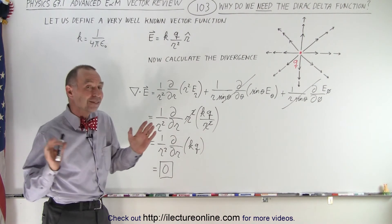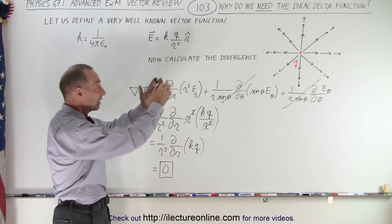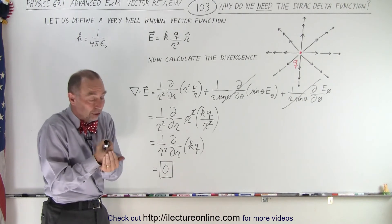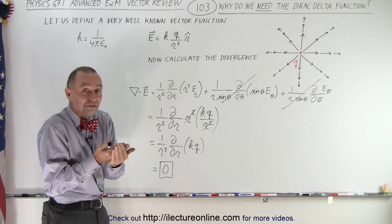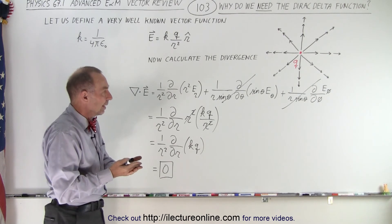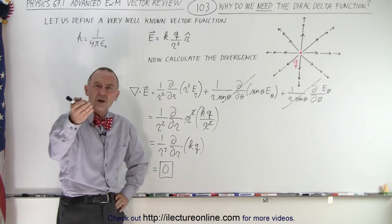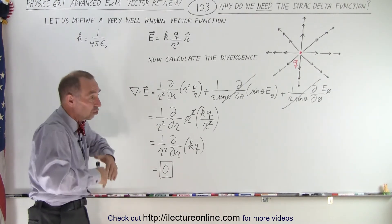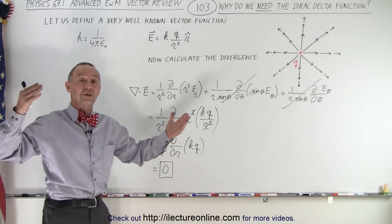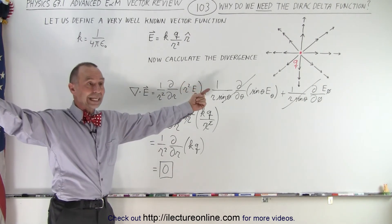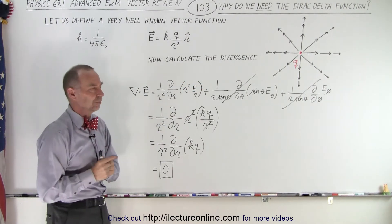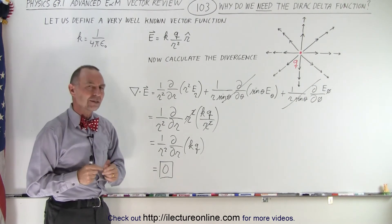So now we're beginning to see some connection between something like this, where there's a point charge, meaning there's only a meaningful value when r equals 0. And then you say, well, what is the charge density at that location? Well, the charge density at that location would be infinite, because you have all that charge in a zero-volume position. That sounds a lot like a Dirac delta function.